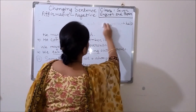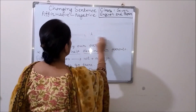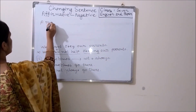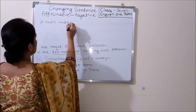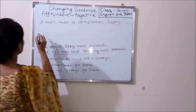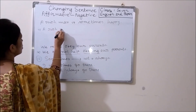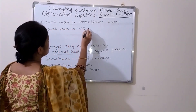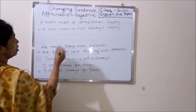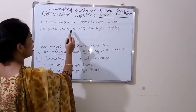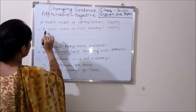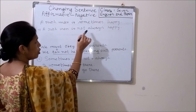We will see another example where we will get an auxiliary verb. 'A rich man is sometimes happy.' In negative: 'A rich man is not always happy.' Dear learners, here there is an auxiliary verb 'is,' so we don't need to use another auxiliary verb. We directly place 'not' after 'is': 'A rich man is not always happy.'